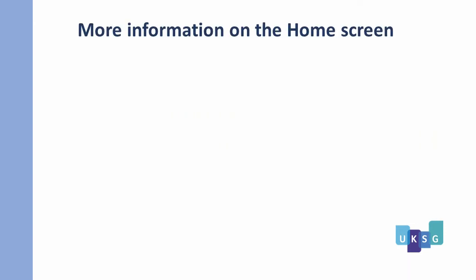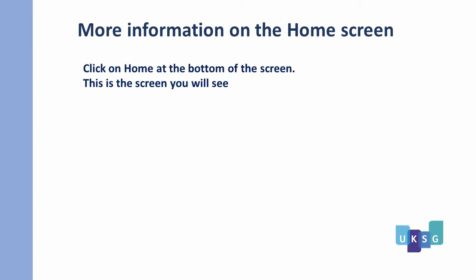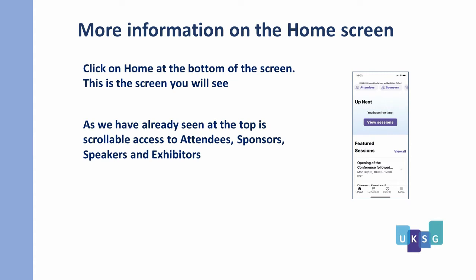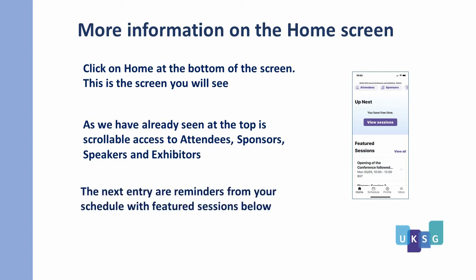Now for more information on the home screen. Click on Home at the bottom of the screen. At the top is scrollable access to attendees, sponsors, speakers and exhibitors. The next entry shows reminders from your schedule with featured sessions below.